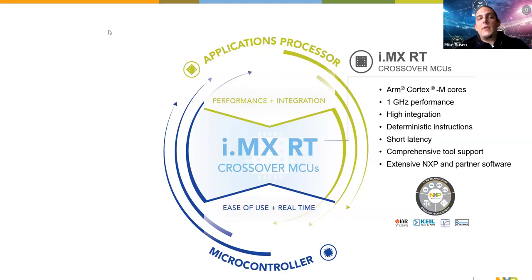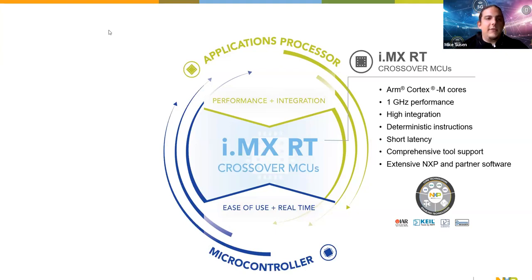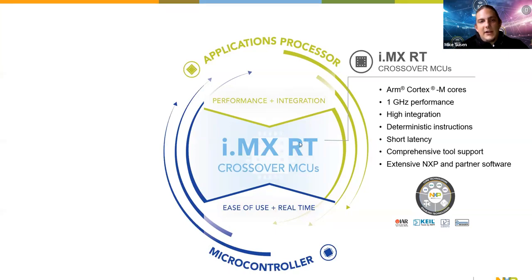The i.MX RT are still MCUs — there's no way to run Linux or Android on them — but they integrate Cortex-M7 cores, the most powerful available. We can offer up to 1 GHz performance; for example, the i.MX RT1170 can run up to 1 GHz, which is pretty huge for just an MCU. We also offer partner software, and that's why we're here to talk about the i.MX RT1020.